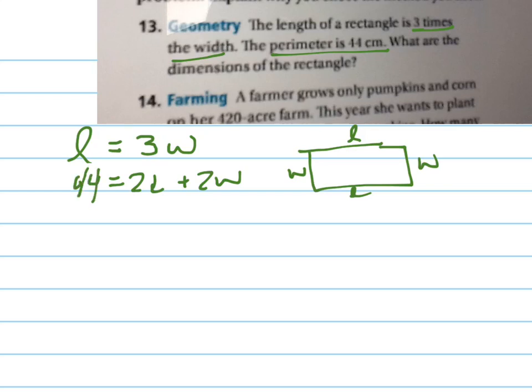And it says what are the dimensions? Alright, so here's my two equations. The easiest way to solve this one is by substitution because it's already solved for L. So let's plug that in right here. So 44 equals 2 times 3W plus 2W. Let's simplify this.